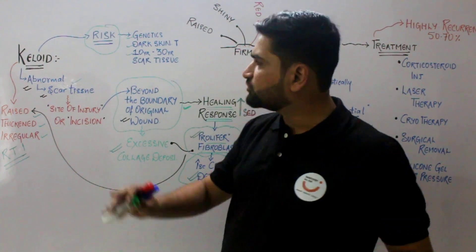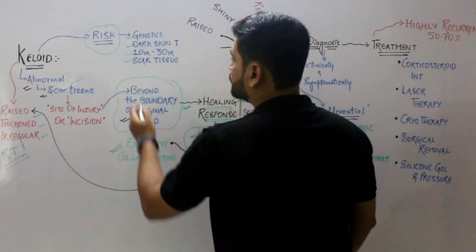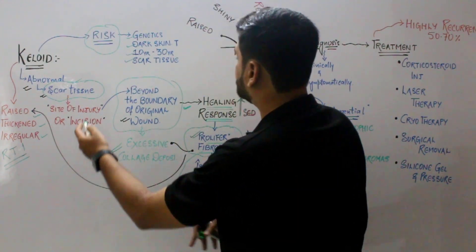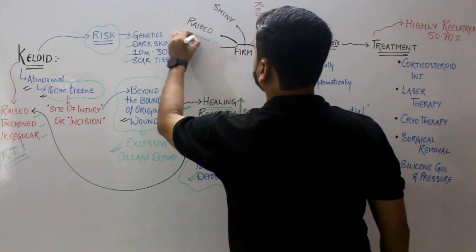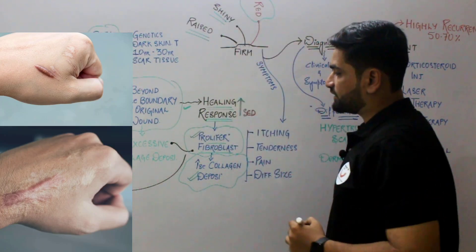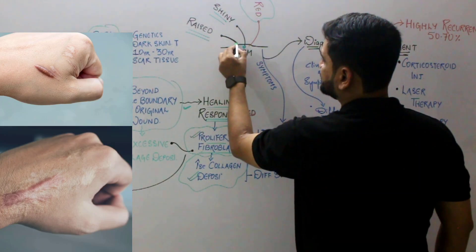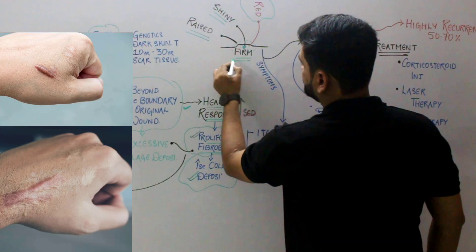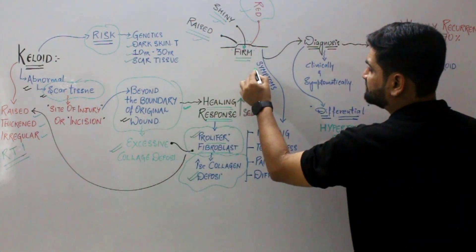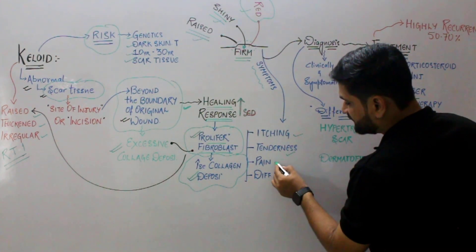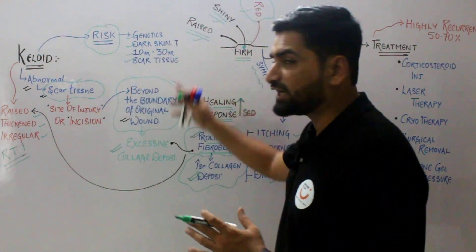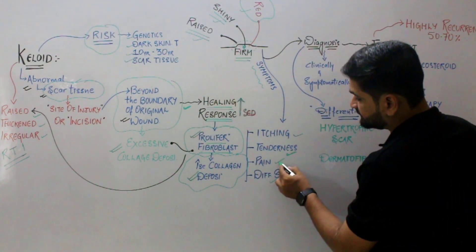The age group most affected is a younger age group of 10 to 30 years, and it is seen more in areas prone to scar tissue. When these predisposing factors come together, they can lead to formation of keloid. The keloid looks like a raised, shiny mass that appears red or dark around the site of injury. The patient may experience itching, tenderness, pain, and the lesion can be of varied sizes.